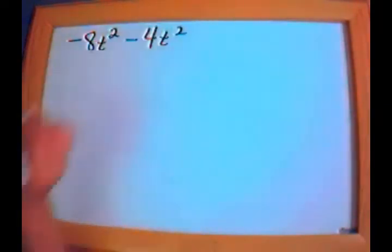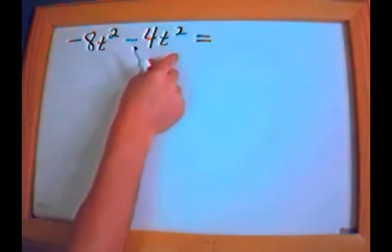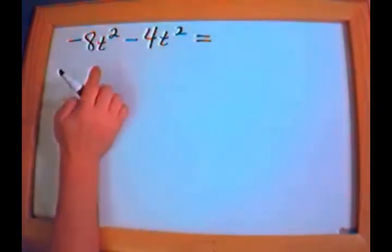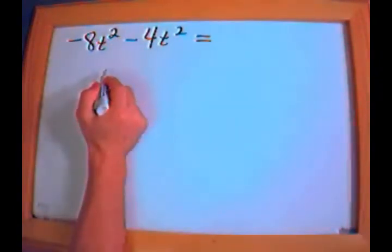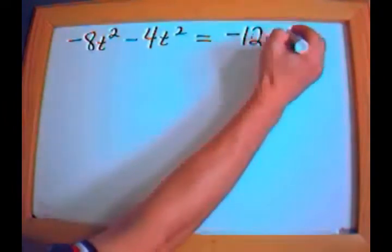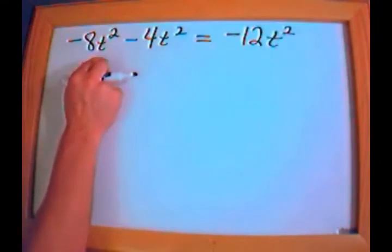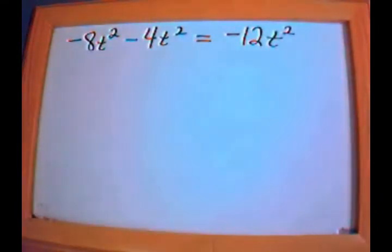Now let's get into some actual simplification. Here's an algebraic expression: negative 8t squared minus 4t squared. I want to simplify this. Here I have a t squared and here I have a t squared — because t squared is common to both terms, I can simply add them. Negative 8 minus 4 is negative 12, so the answer is negative 12t squared. You just carry the variables through because you're describing the number of t squareds — kind of like the number of apples.